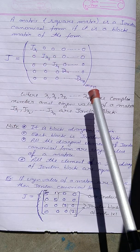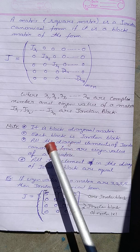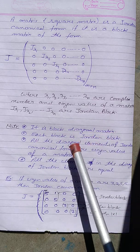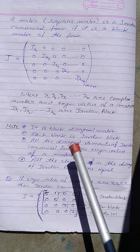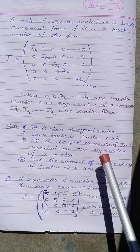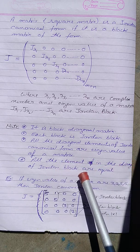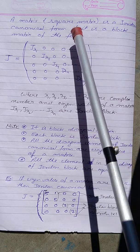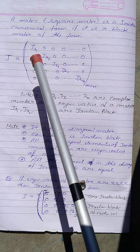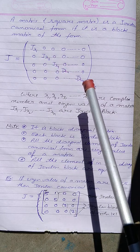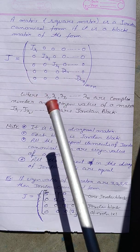Some important properties of Jordan canonical form: it is a block diagonal matrix and each block is a Jordan block. All the diagonal elements of the Jordan canonical form are eigenvalues of the matrix. All the elements in the diagonal of a Jordan block are equal. The Jordan canonical form is the collection of Jordan blocks situated along the diagonal.